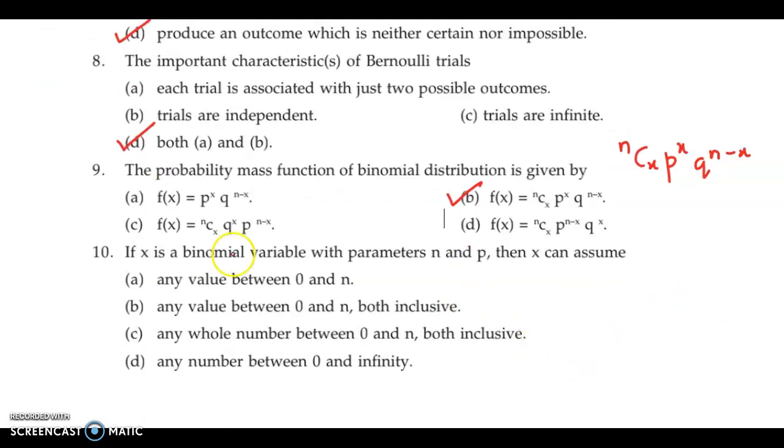Next question number 10. If x is a binomial variable with parameters n and p then x can assume. Now we know that if n is the total number of trials and x is the desired number of success then the value of x varies from 0 to n. So the correct answer is it can be any value between 0 and n both inclusive. However it cannot be any value it has to be the whole value 0, 1, 2, 3 because binomial distribution or a binomial variable is discrete. So the correct answer is any whole number between 0 and n both inclusive which is option C.